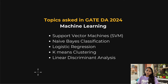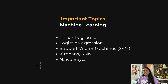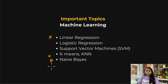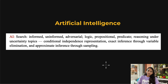For machine learning, questions in GATE DA 2024 were asked from SVM, Naive Bayes classification, logistic regression, K-means, and linear discriminant analysis. The important topics I recommend studying are: linear regression, logistic regression, SVM, K-means, KNN, and Naive Bayes. Among these, linear regression, K-means, KNN, and Naive Bayes are the easier ones.